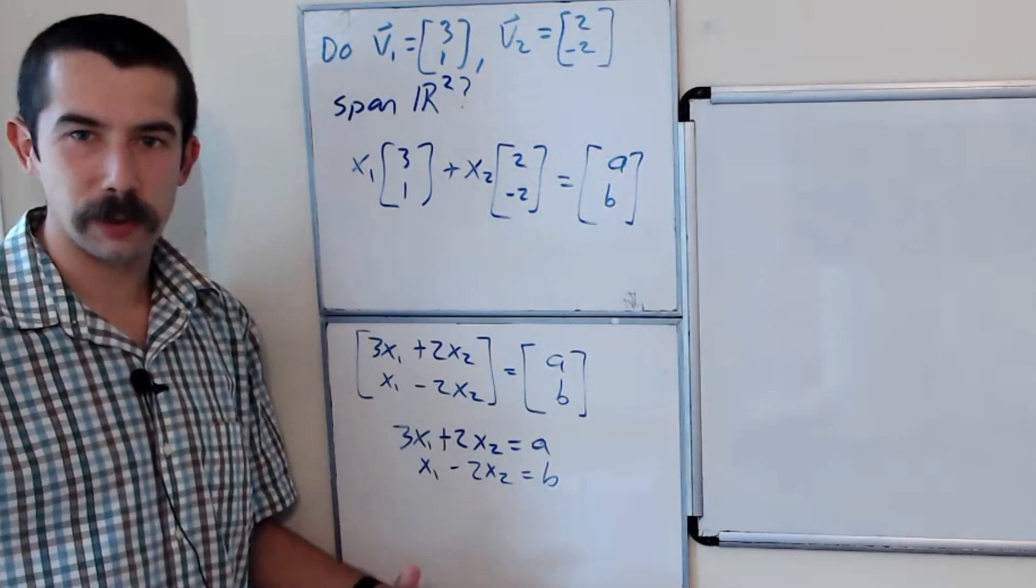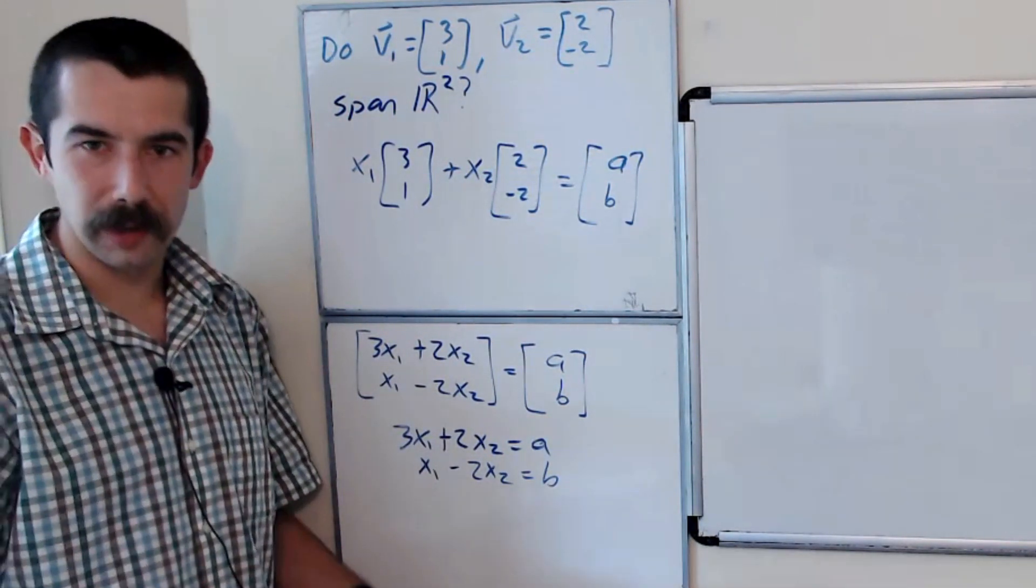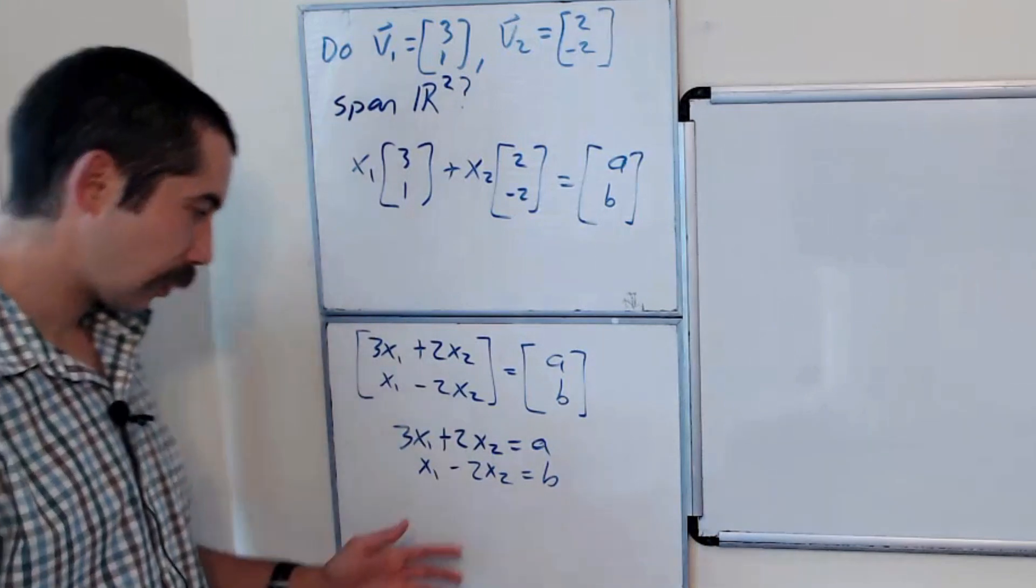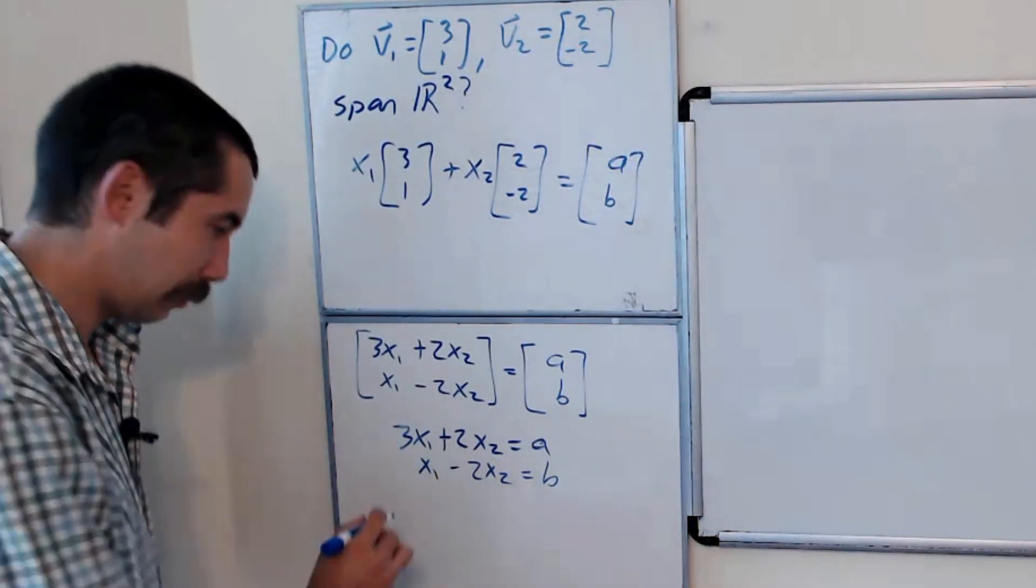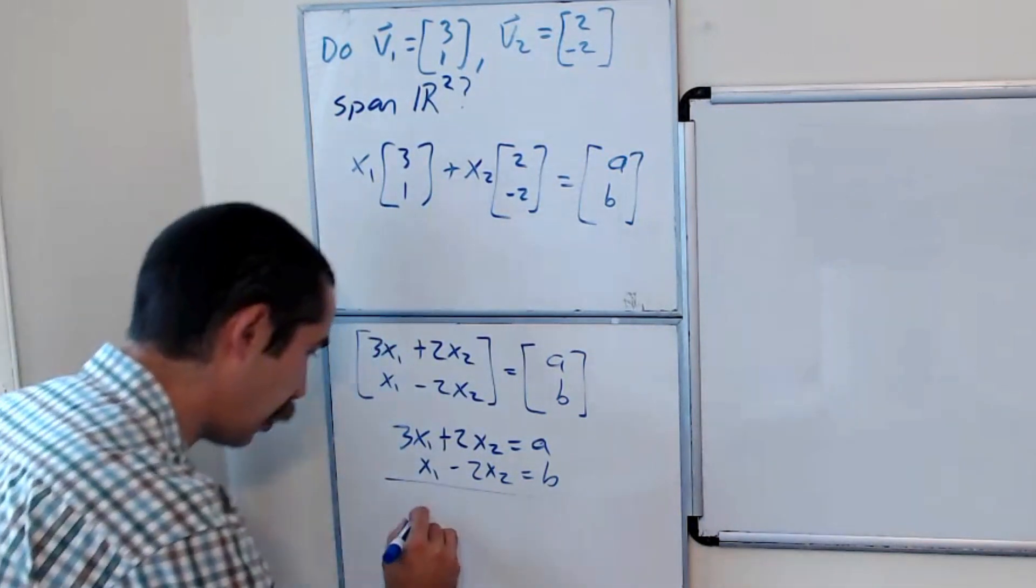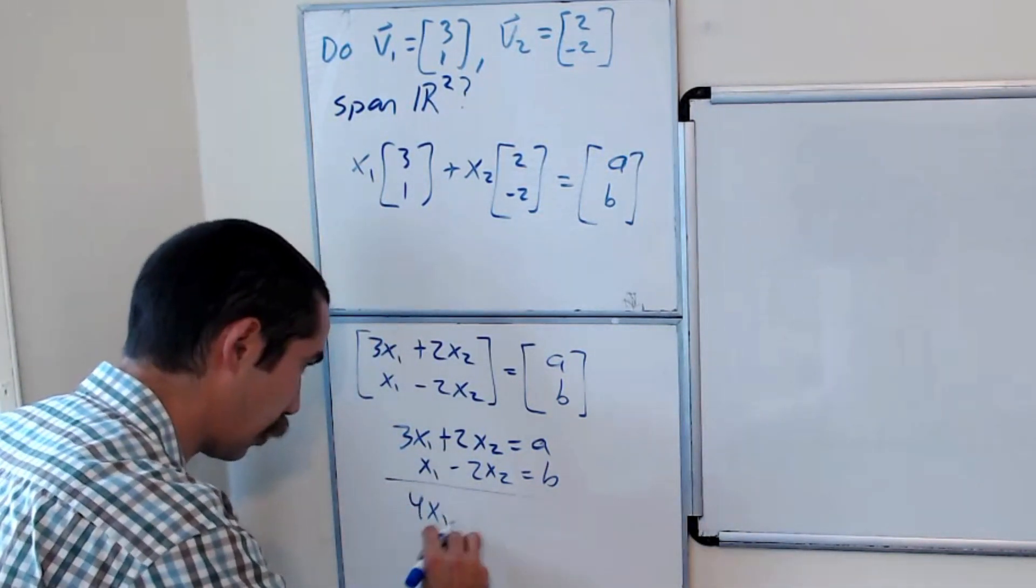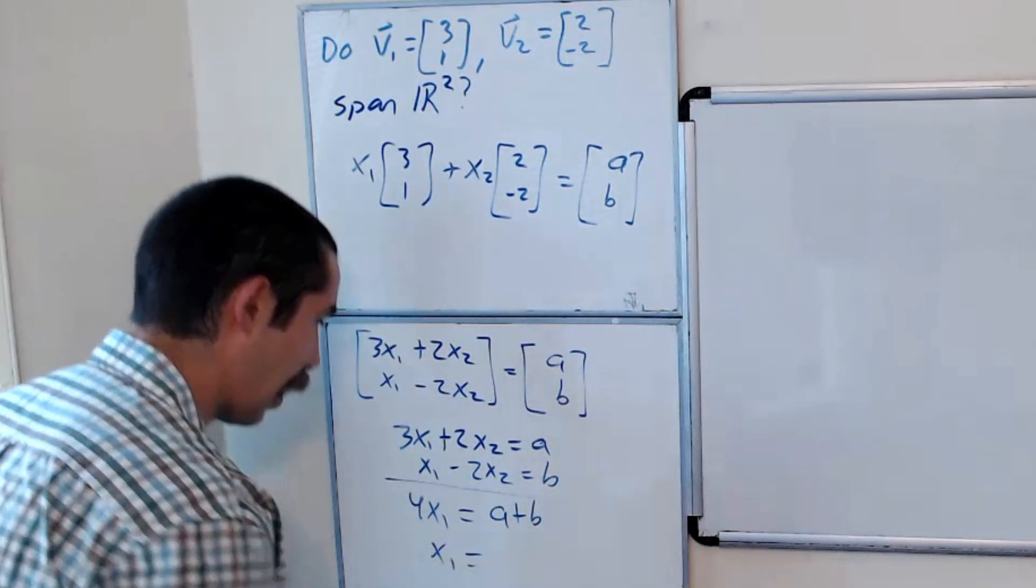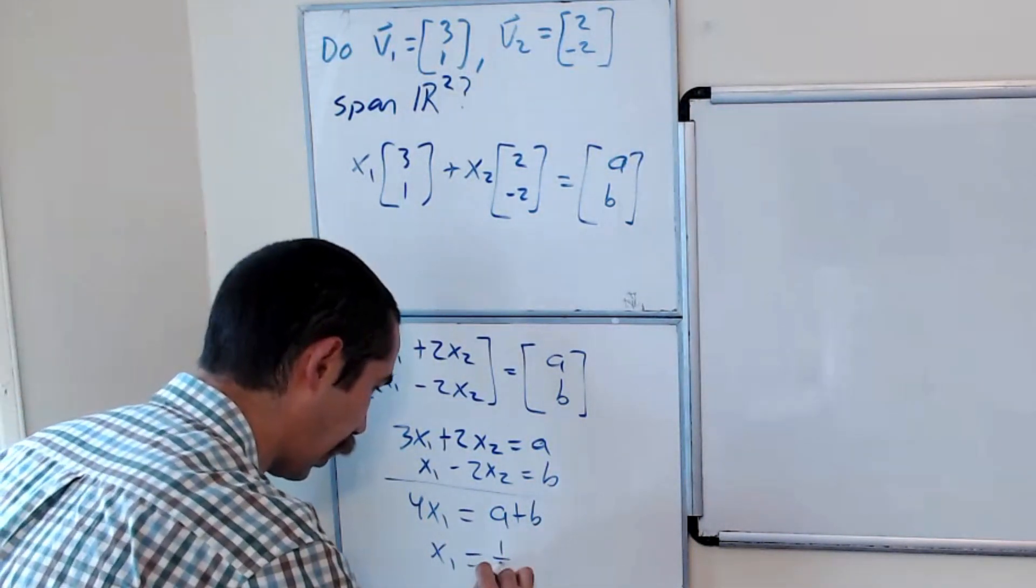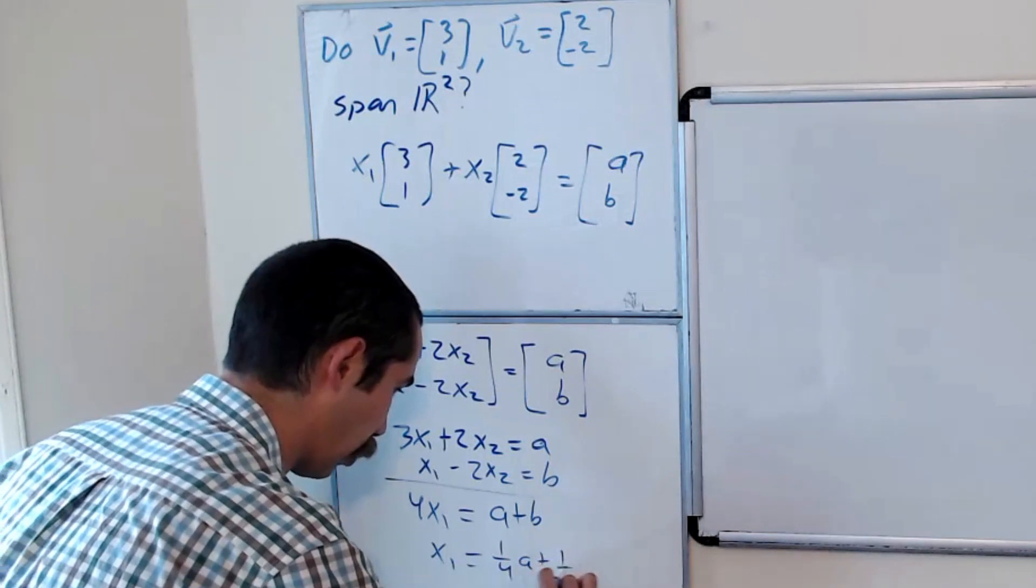And we want to solve for x1 and x2 in terms of a and b. So we can add these two equations together and get the equation 4x1 equals a plus b, or that is to say x1 equals one-fourth a plus one-fourth b.